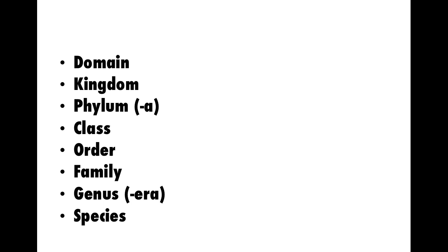We have eight levels of taxonomic organization — eight different levels of taxonomy. At the highest, most inclusive level is the domain. We've got three domains. And then: kingdom, phylum, class, order, family, genus, species.